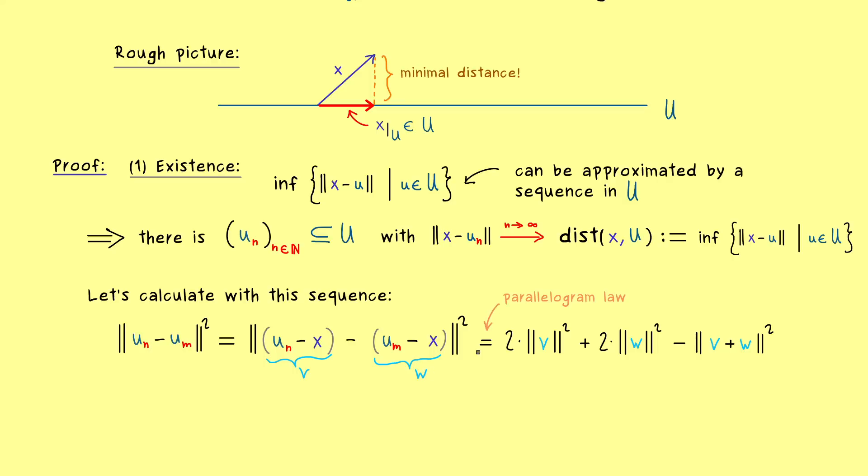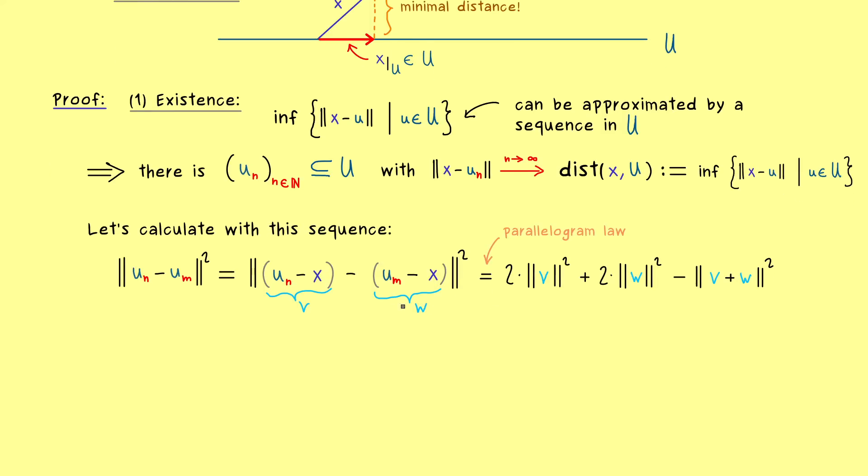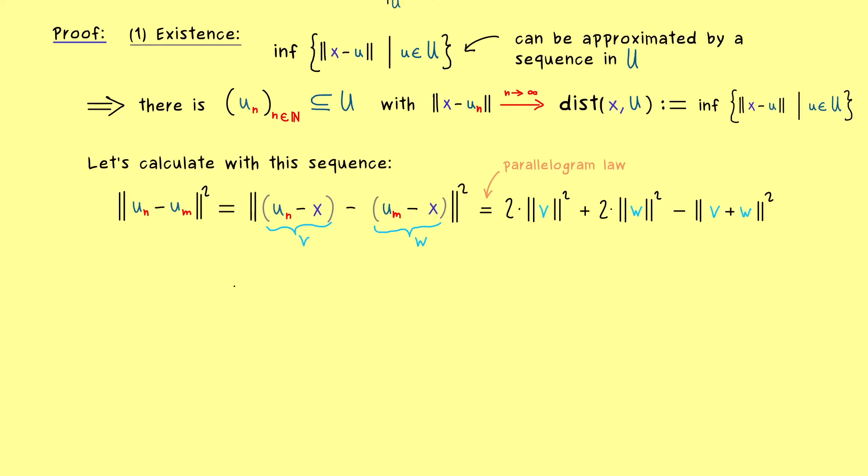So please note again, here we have used that we actually have an inner product space. And now in the next step let's go back to our original vectors u_n, u_m and x. This means the first part here for v we can substitute x minus u_n and for w we have the same just with u_m. And now these two parts should not be a problem because by assumption we already know that they will converge to our distance x to U.